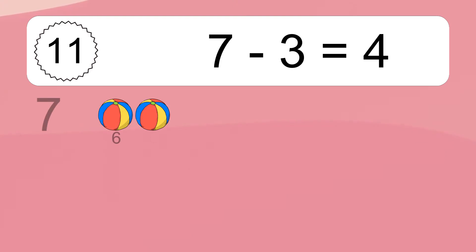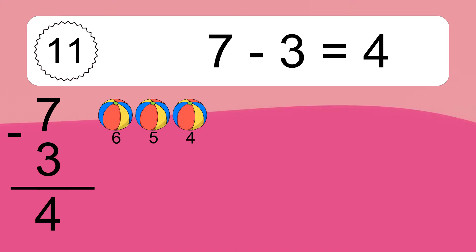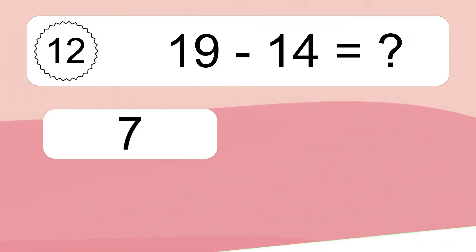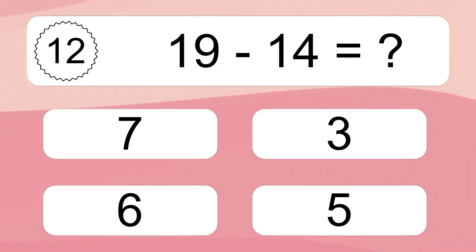7 minus 3 equals what? 7 minus 3 equals 4. Let's count it: 6, 5, 4.